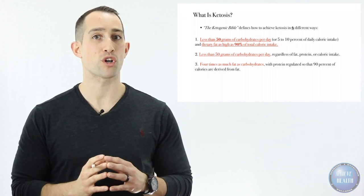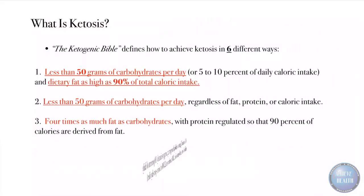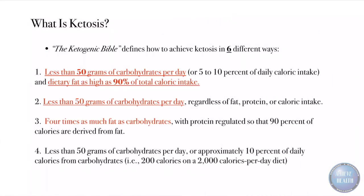Two to one sometimes could work, but three to one will be optimal for almost anybody. Number four: less than 50 grams of carbohydrates per day or approximately 10 percent of daily calories from carbohydrates, 200 calories on a 2,000 calorie per day diet.